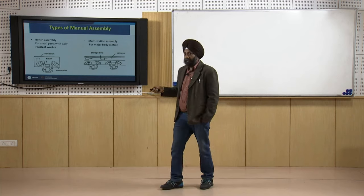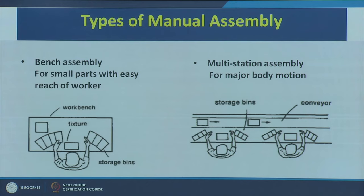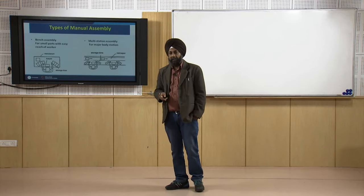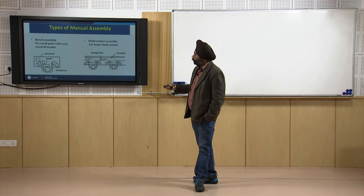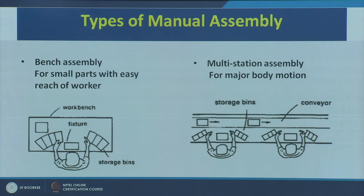Now let us look at the types of manual assembly operations. First is bench assembly: a worker takes parts from storage bins arranged in a semi-circular fashion — standard workspace design taught in work system design — and assembles them in a fixture. The bins are oriented following standard guidelines for maximum and minimum working area for an average able-bodied person. This is the most common type for small parts within easy reach of the worker.